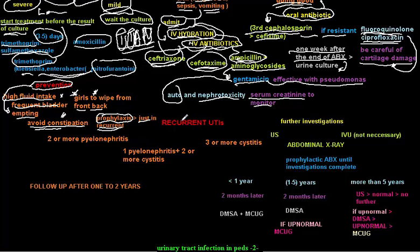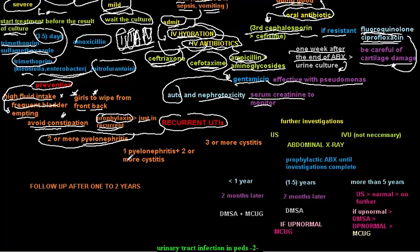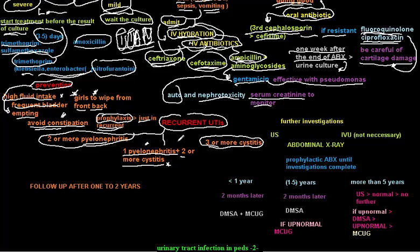The definition of recurrent UTI is: two or more pyelonephritis episodes, or one pyelonephritis plus two or more cystitis episodes, or three or more cystitis episodes. To clarify: two cystitis alone is not recurrent UTI, but two pyelonephritis is. One pyelonephritis plus two or more cystitis is recurrent UTI. Three or more cystitis episodes also qualifies as recurrent UTI.